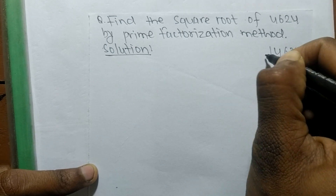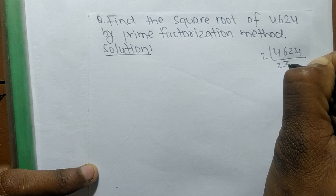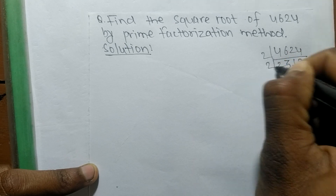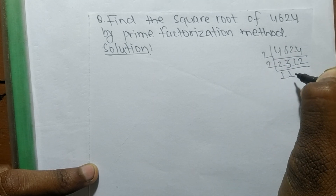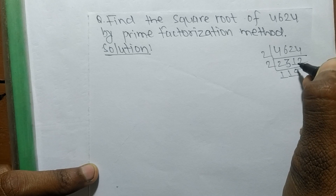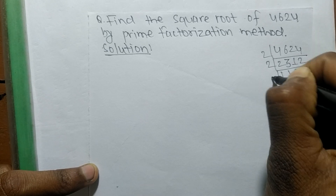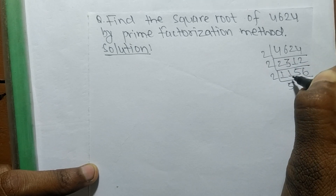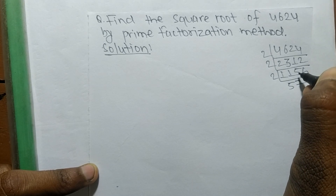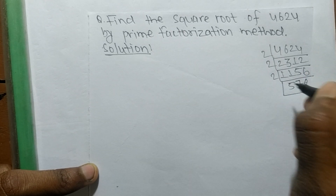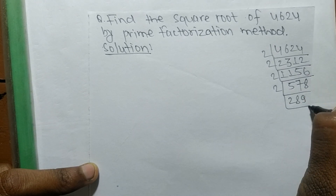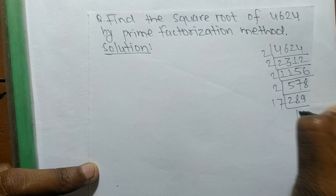So we divide 4624 by its prime factors. Dividing step by step: 4624 divided by 2, then again by 2, continuing to divide by 2 until we get the factors. Eventually we find that 4624 equals 2 times 2 times 2 times 2 times 17 times 17.